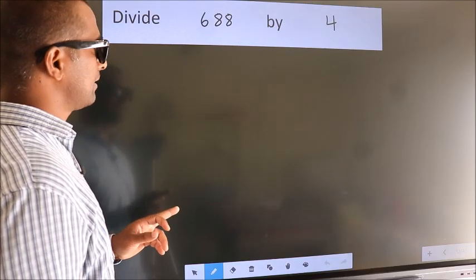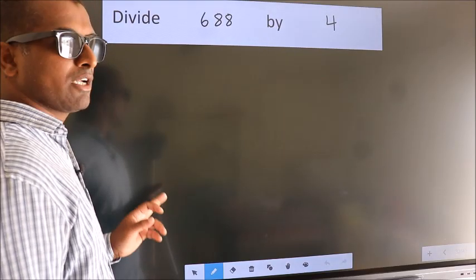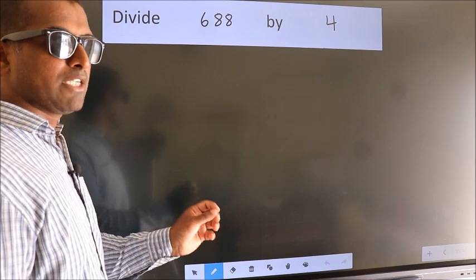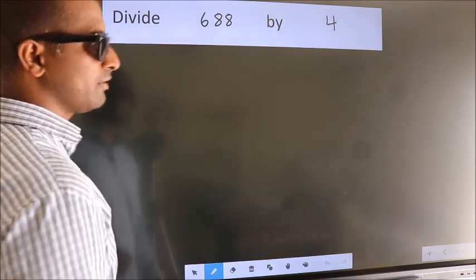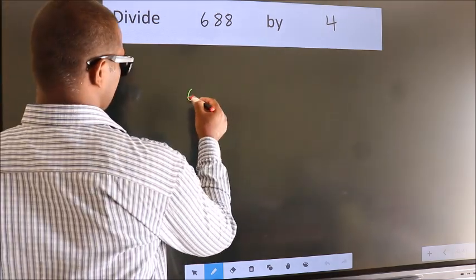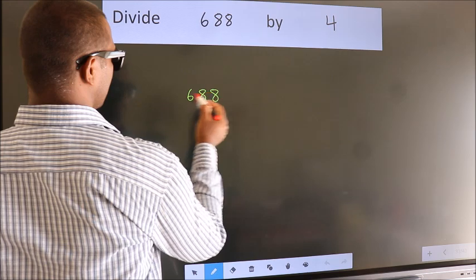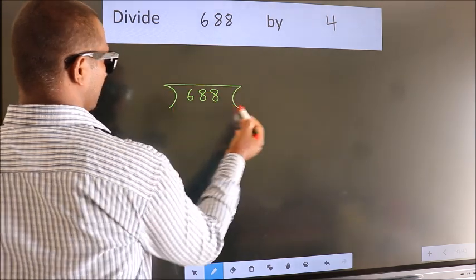Divide 688 by 4. To do this division, we should frame it in this way. 688 here, 4 here.